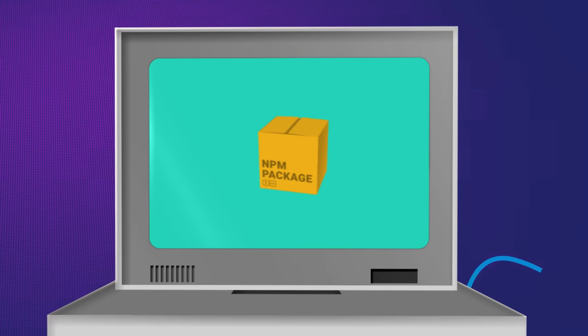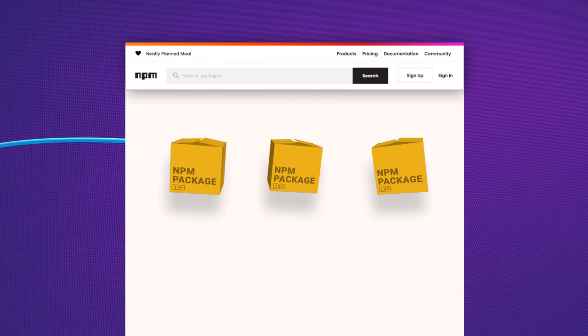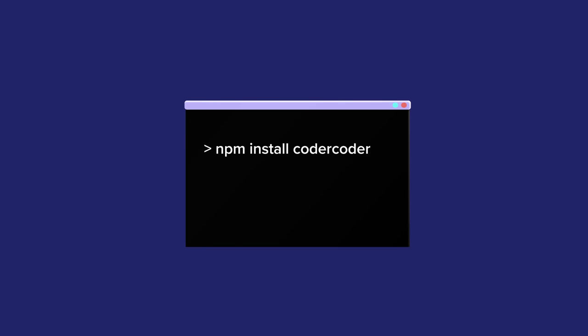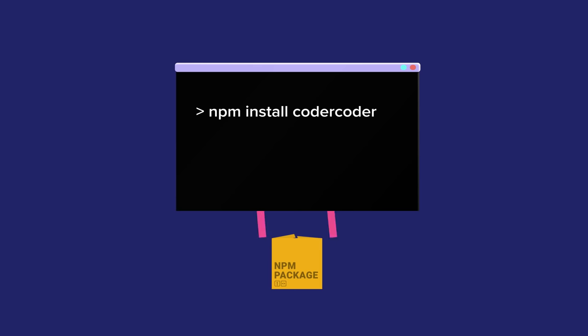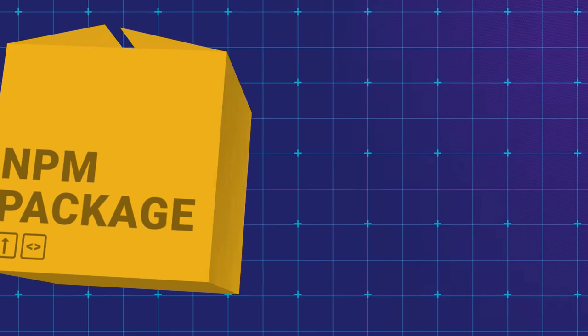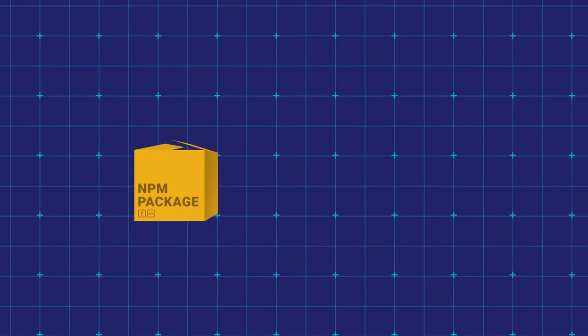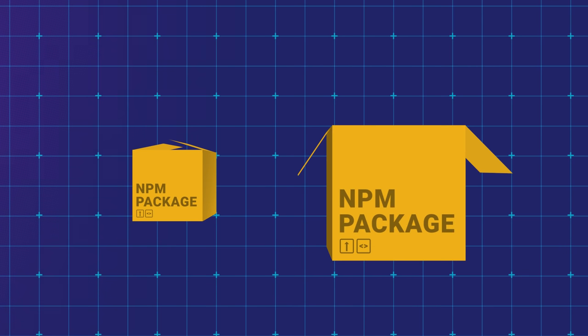Authors will write the code for their package and publish it on the NPM registry. Then, if you want to use that package, you can install it onto your own computer with the NPM CLI or command line interface. There are all kinds of packages, from small single-purpose ones to large libraries.